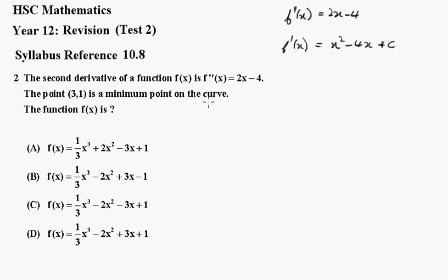Now we know that we get a minimum point at (3,1). So that means that when this equals 0, x equals 3. So 9 minus 4 times 3 plus c equals 0. 9 minus 12 plus c equals 0. So therefore c must equal 3.